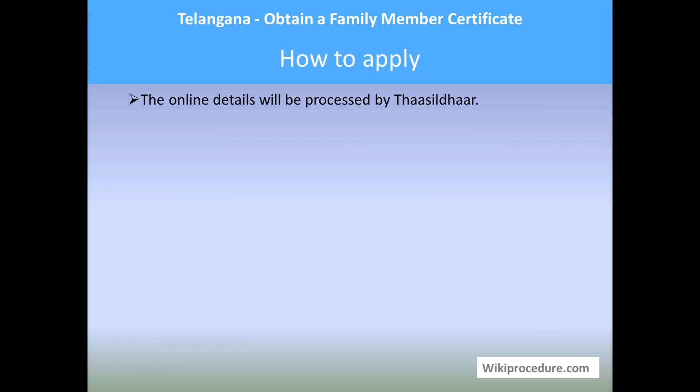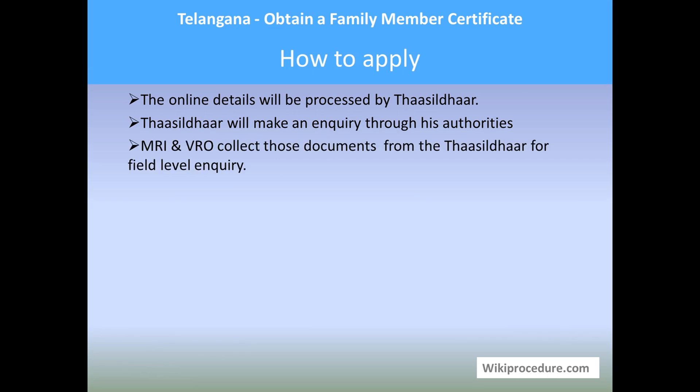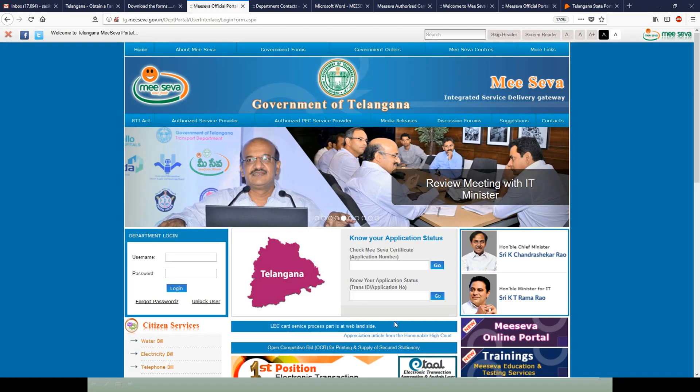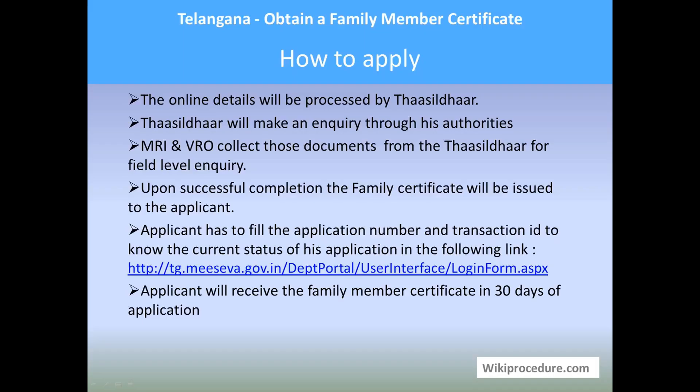The online details will be processed by the tahsildar, who will have access to see the current updates in the portal. The tahsildar will make an inquiry through authorities like the MRI and the VRO, who will collect documents from the tahsil center and do the field-level inquiry. Upon successful completion, they will submit the report, based on which the tahsildar will issue the family certificate to the applicant. The applicant has to use the application number and transaction ID to know the current status in the provided link. The family member certificate will be received within 30 days of applying.